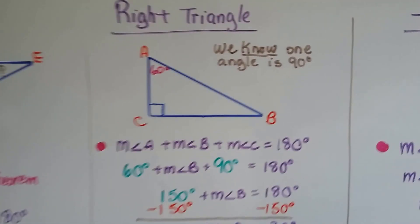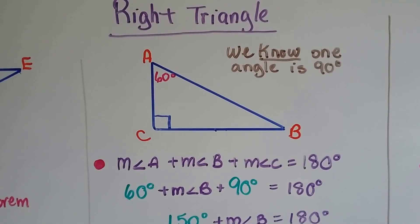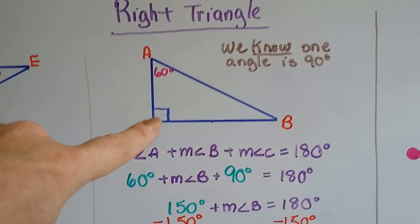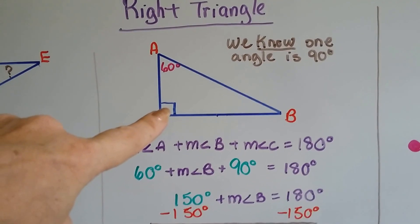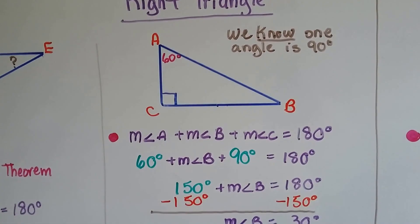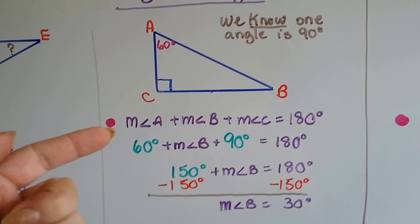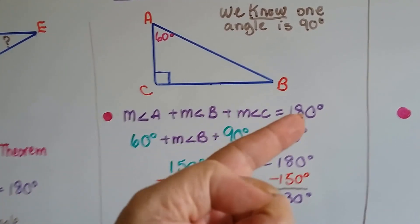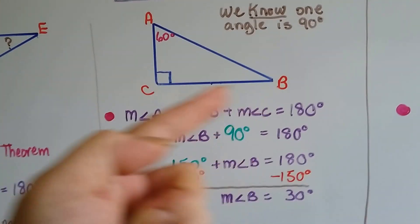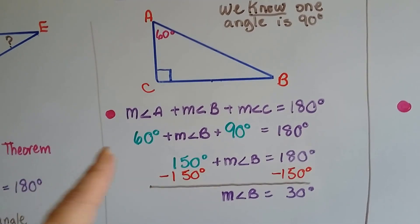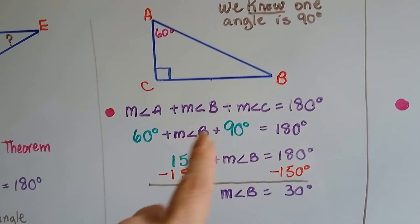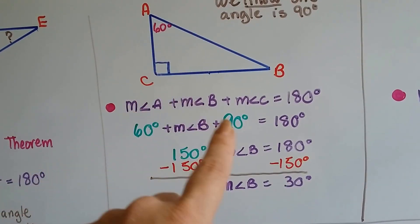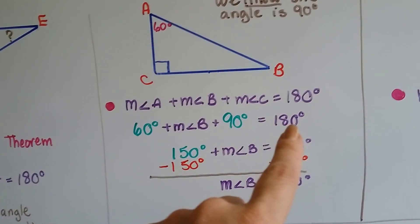Let's look at a right triangle when we know one angle is 90 degrees. If they give us that this is 60 and we see this 90-degree symbol, we know that's a right angle. The Triangle Sum Theorem as an equation is measure of angle A plus B plus C is 180. So we have 60 degrees plus the measure of angle B, the one we don't know, and C is 90. That's going to equal 180.